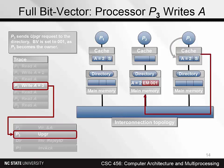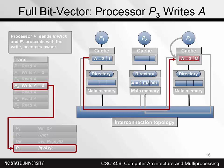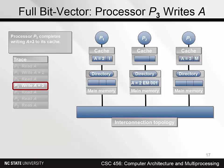Next, P3 writes A, but its copy of the block is in state S, so it has to issue an upgrade transaction to the home node. This causes the main memory state to change to P3, causing P1's cache line to change state to I. P1 sends an inv-ack back to P3, which allows P3's cache line to change to state M.